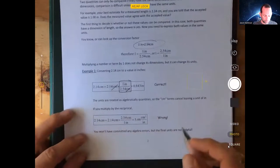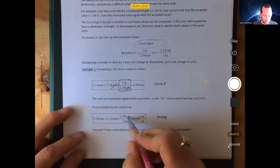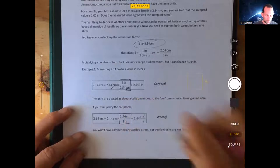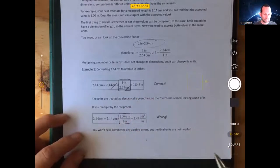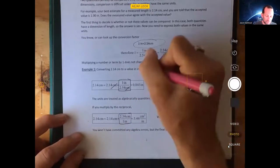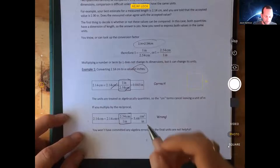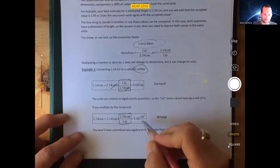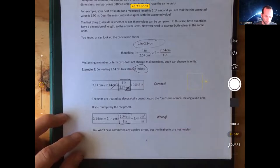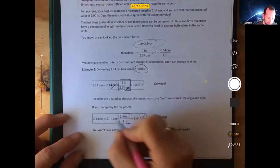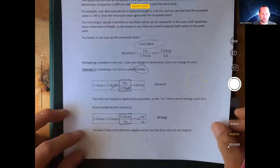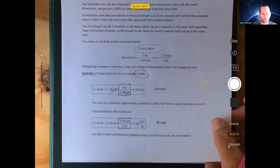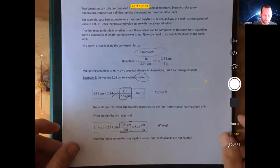As it shows here, if you were to do it the other way around, 2.14 centimeters times 2.54 over one, well, these two things are equivalent so it's okay to multiply by that, but it won't get you the answer in inches, which is what you want. It gives you the answer in centimeters squared per inch, which is a really strange unit of length and not what we were going for. If you pay attention you're like, oh no, that doesn't cancel. Otherwise you don't want to just be taking a 50-50 chance on it. You want to actually write out the units and show your work.